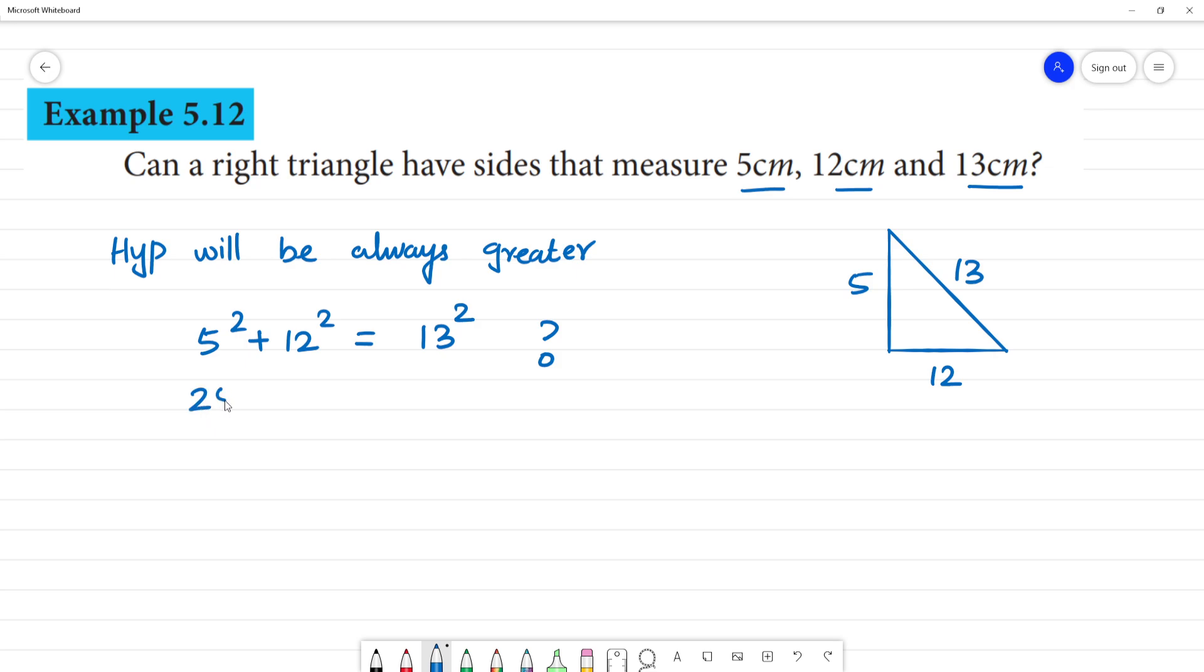5 square is 25, plus 12 square is 144. 13 square is 169. So, 25 plus 144 is 169, which is equal to 169.